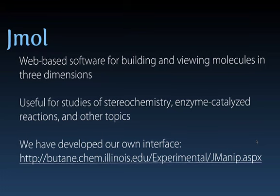We'll also use JML, which is a Java-based molecular viewer that you can use to both view and build molecules in three dimensions. This is very useful for studies of stereochemistry, where the shape of molecules is absolutely critical. We'll also use it to look in detail at the active sites of enzymes and learn about how they catalyze chemical reactions. We've developed our own interface to JML, which you can find in the Molmedac wikispace. The URL is given here, and if you'd like to use it to build your own molecules as you move forward in the course, you're absolutely welcome to.